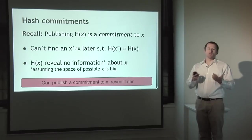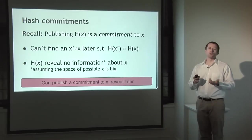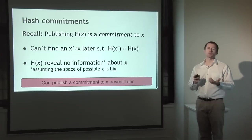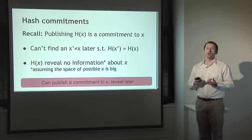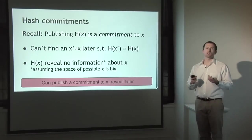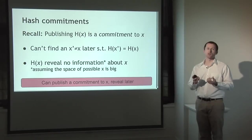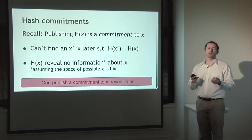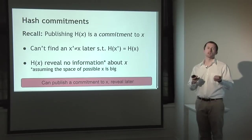We can use hash functions to commit to data. Instead of publishing the data X that we want to prove we know, we publish the hash of X. The properties of the hash function guarantee that we can't later find some other value X prime that has the same hash value as X — that would be a break of the cryptographic properties. The hash of X also shouldn't reveal any information about X, with the caveat that this is only true if X comes from a large possible space.